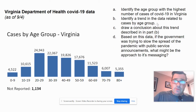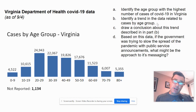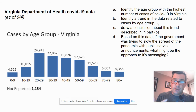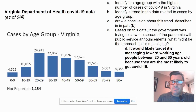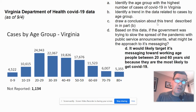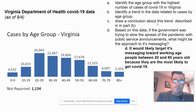Based on this data, if the government was trying to slow the spread of the pandemic with public service announcements, what might be its approach to messaging? This is a policy question — a rule, law, or action the government takes to address a problem. A possible answer: the government would likely target its messaging toward working-age people between ages 20 and 60, because they are most likely to get COVID. That's one set of data.